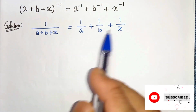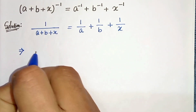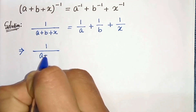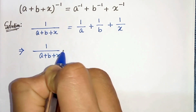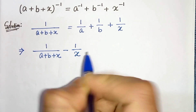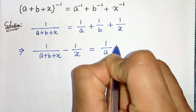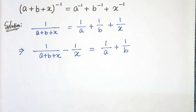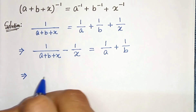Now let's take 1 by x to the left hand side. So we will get 1 by (a + b + x) minus 1 by x equals to 1 by a plus 1 by b. Now let us take the LCM.